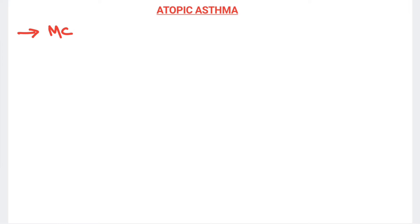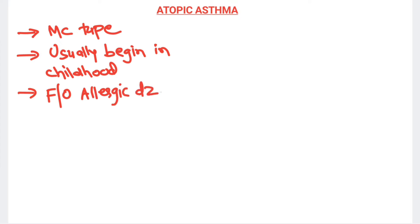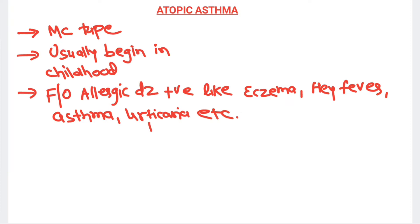Atopic asthma is the most common variety of asthma and usually begins in childhood. This type of allergic asthma — extrinsic asthma — is due to extrinsic allergens. Obviously there will be a family history of allergic disease such as eczema, hay fever, asthma, and urticaria. Such types of allergic disease history are present in the family.